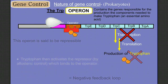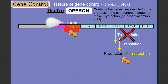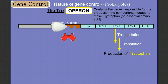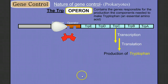So we stop making tryptophan. As we start to consume and use up tryptophan, the repressor will go back to its inactive state, allowing RNA polymerase to bind again to the promoter, and we'll start production of tryptophan again. This is a self-regulating system.